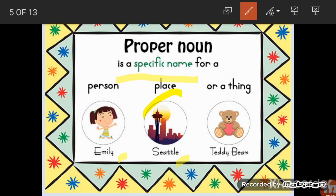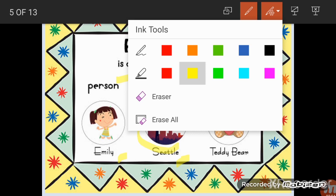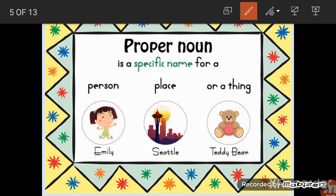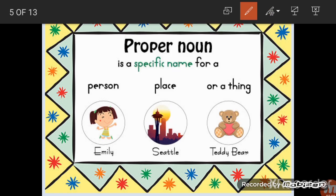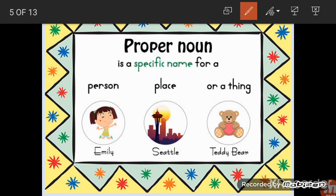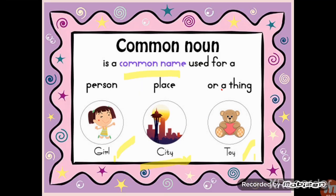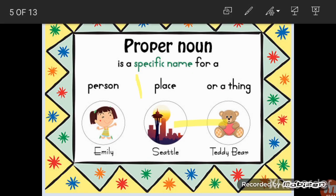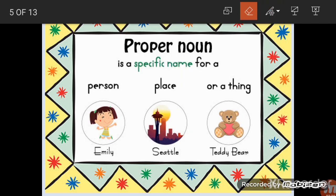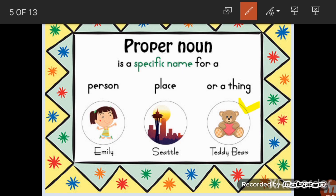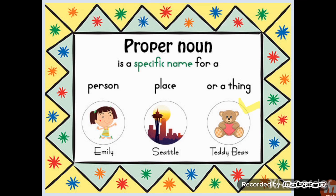There are many cities around the world and in Pakistan too. We call them all 'cities,' but Karachi, Lahore, and Quetta are specific proper names. Likewise, 'toy' is common, but if we name a specific teddy bear, that becomes a particular, proper noun.